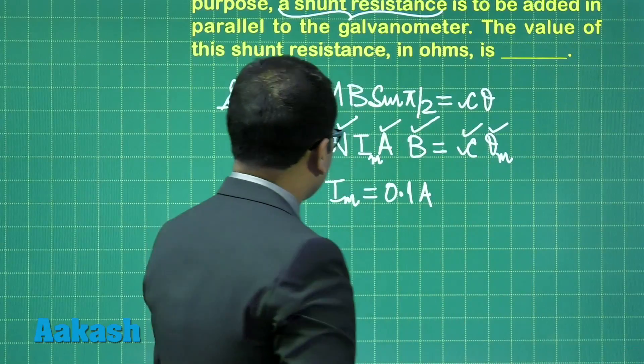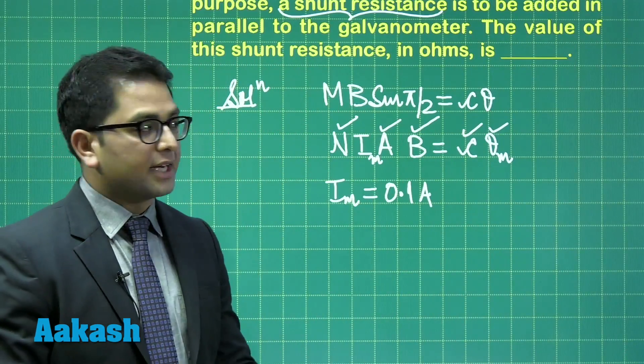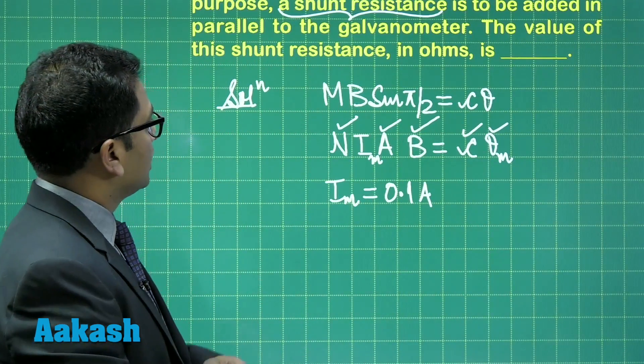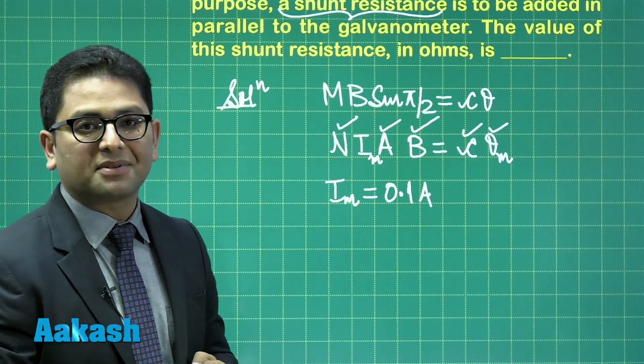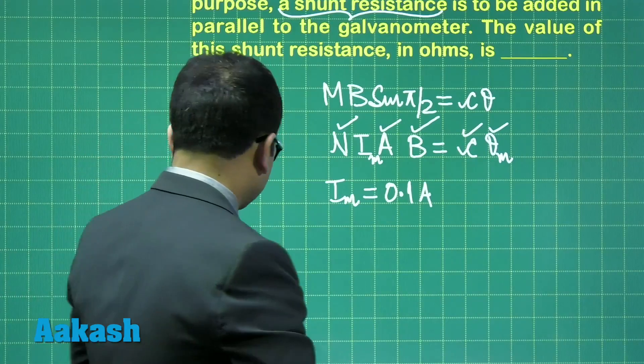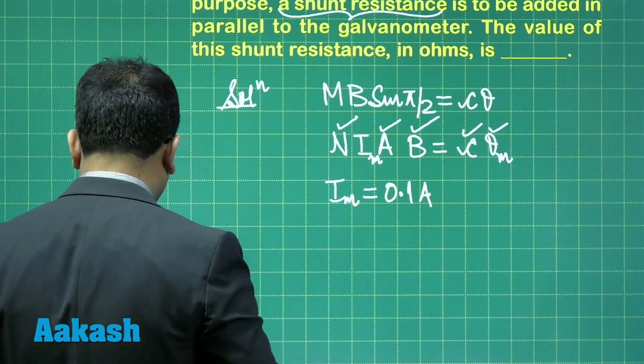Now this galvanometer has a resistance of 50 ohm, and we need to convert it into an ammeter which will be able to measure a maximum current of 1 ampere.